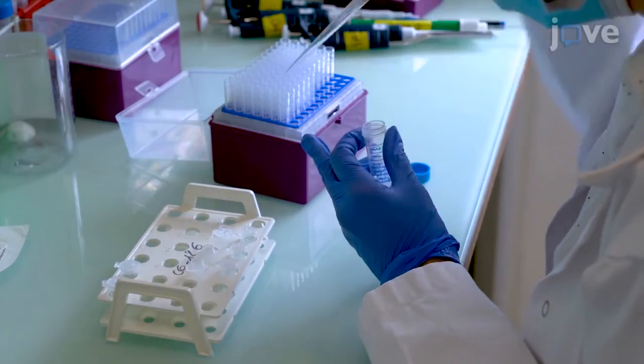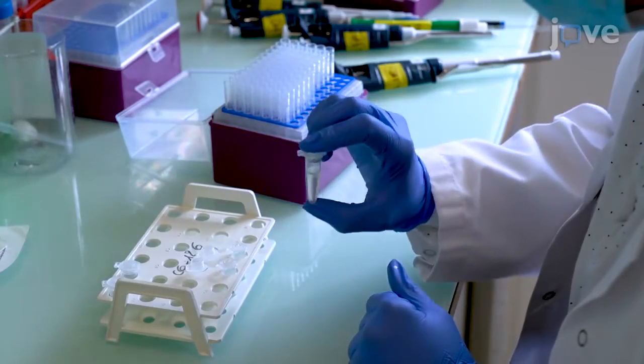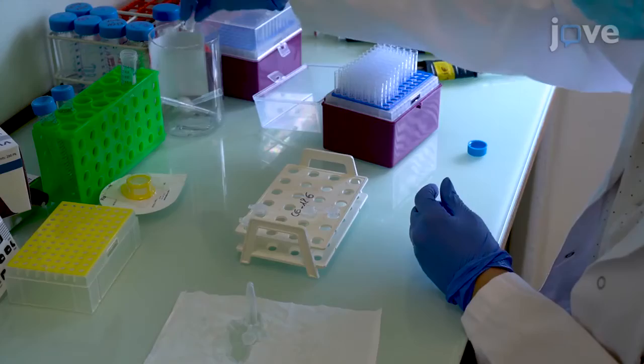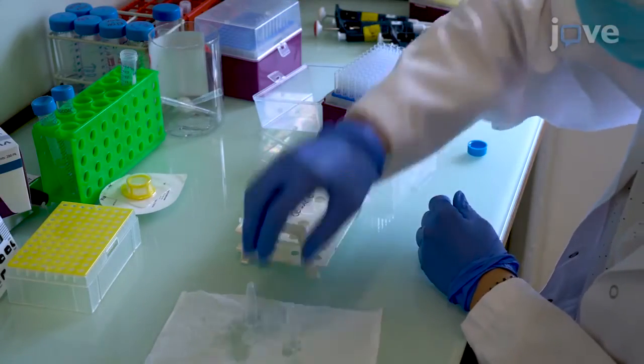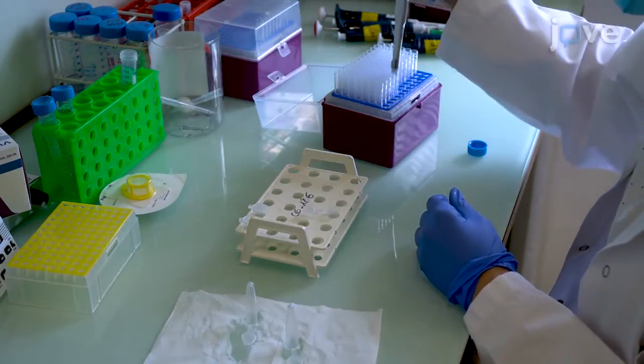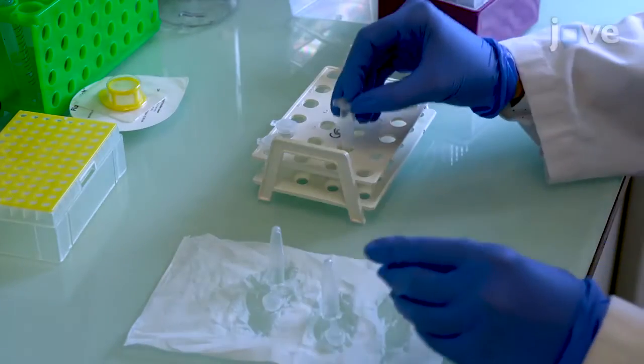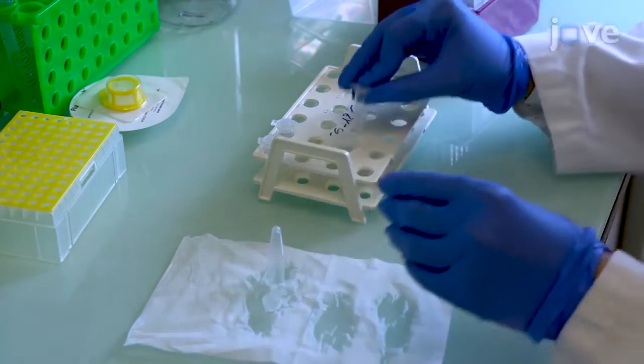To coat the tubes, fill them with BSA and invert them three times. Remove the solution and air-dry the tubes upside down on clean tissue paper for two hours. Coat one collection tube and one 1.5 milliliter tube per sample.